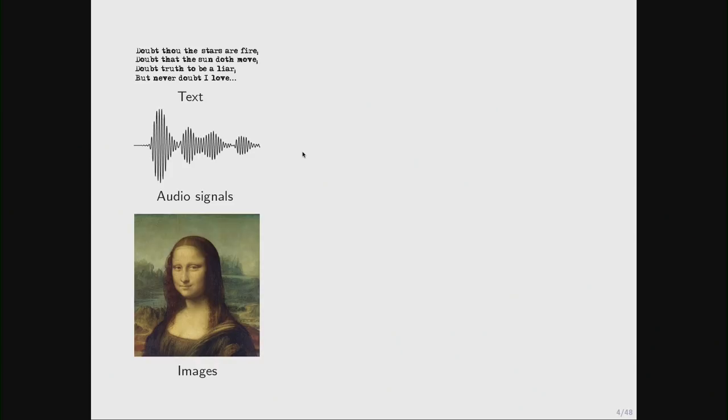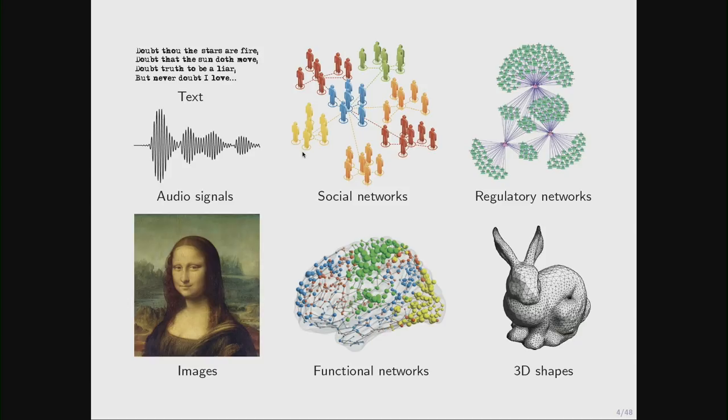Now, if we look at the main focus of research in deep learning, it has been mainly focused on data, or kinds of data, where we can call them Euclidean. Basically, there is some kind of underlying grid structure. Images are a very good example. They can be represented as two-dimensional grids, audio signals, or one-dimensional grids, and so on. But we also, in many cases, need to deal with data that doesn't have this grid structure. We can call it non-Euclidean.